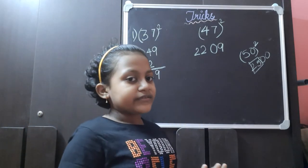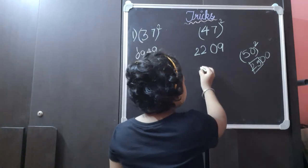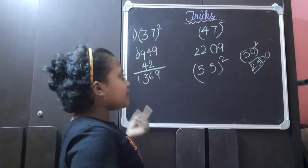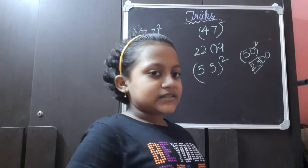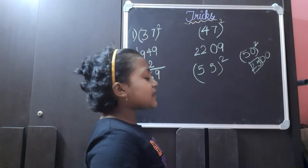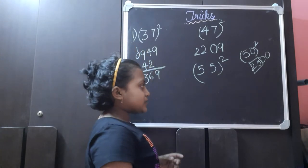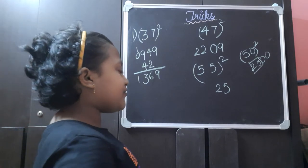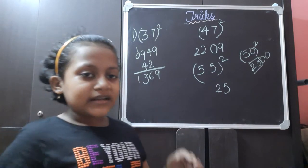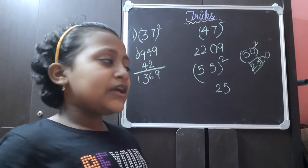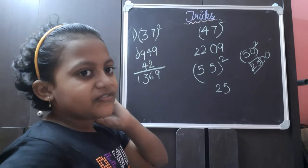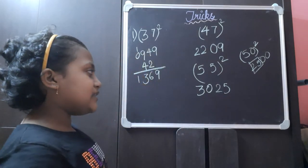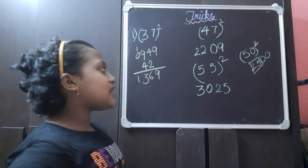This was the method if the number is less than 50. Now if it is more than 50 — for example, 55 square. The number is greater than 50. How much greater than 50? It is 5 more. We write 5 square which is 25. We remember: if less than 50, subtract from 25; if more than 50, add to 25. Here we add 5 to 25 to get 30, and write 30 before 25 to get the answer 3025. This is the answer for 55 square.